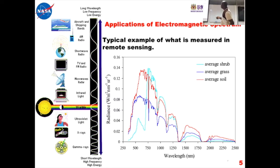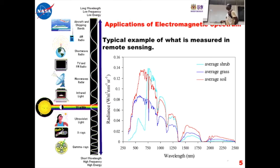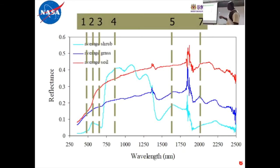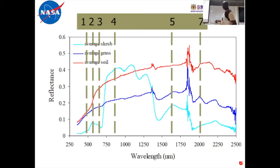Looking at the spectral signatures: for strobe, this is what the signal looks like in remote sensing. When we have grass, and when we have soil, it gives red. So this shows the wavelength and the radiance. We have band one, two, three, up to seven. The details of data analysis don't concern us here — this is just to introduce us to what we have.